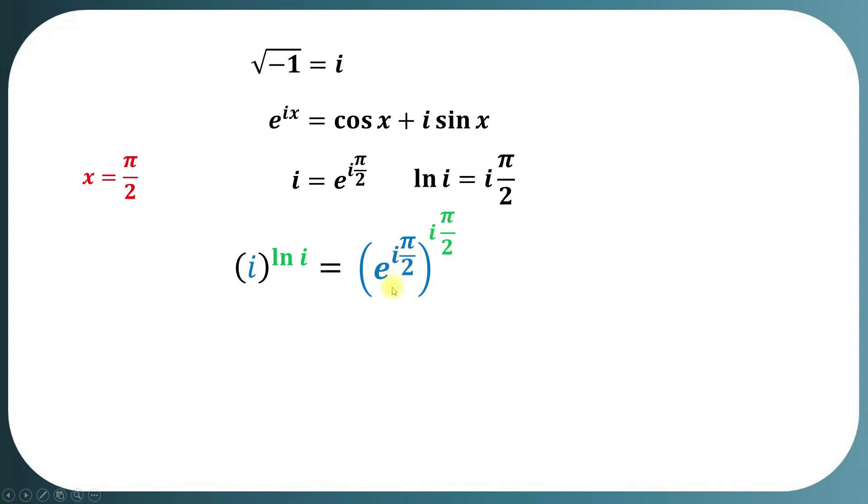Now by rule of exponents, this expression becomes e to the iota squared times pi squared over 4.